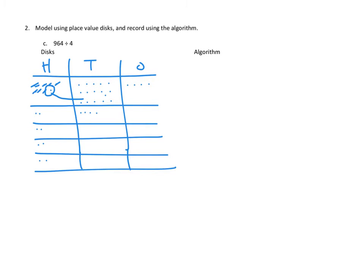So we divide our 16 tens evenly into the 4 groups, giving us 4 tens in each group. All of our tens are used up. We don't have any more that we have to unbundle.